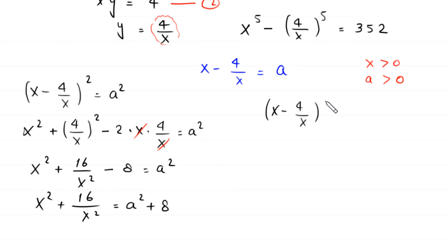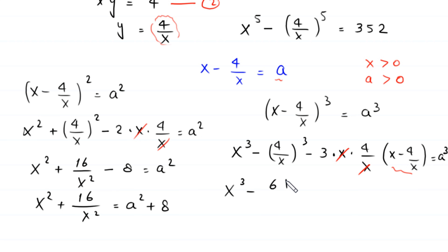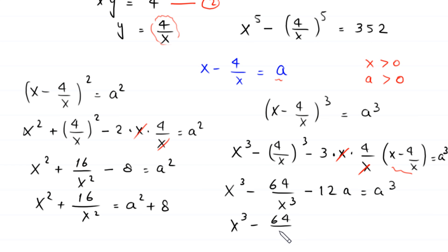Now take the cube of both sides of (x minus 4/x) equals a. This expands to x³ minus 64/x³ minus 3·x·(4/x)·(x minus 4/x) equals a³. Simplifying, x³ minus 64/x³ minus 12a equals a³, so moving the 12a to the right-hand side: x³ minus 64/x³ equals a³ plus 12a.